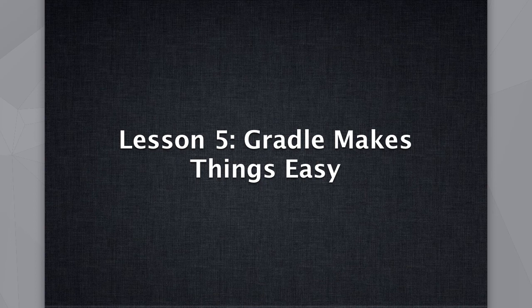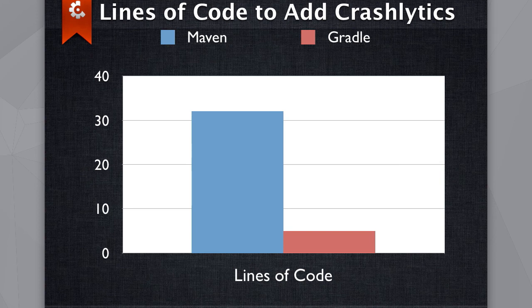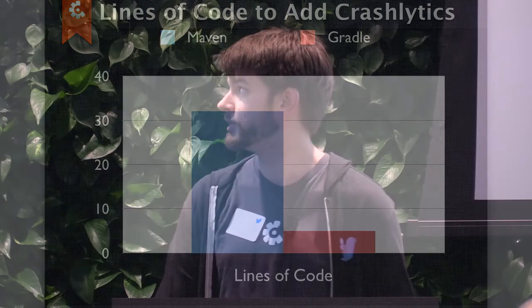As a final lesson: Gradle makes things easy. For our users, they only have to add five lines of code to their Gradle build script to add Crashlytics, whereas in Maven they end up having to add 32. It's also been super easy to work with Gradle as a build tool — it was very trivial to add support for flavors, variants, and other unique things it brings to the table.